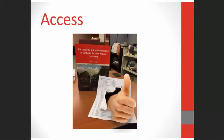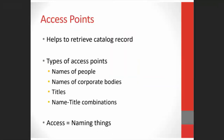Now that Bob has been described and his record matches him, how can patrons find him in the catalog? This is called access in cataloging. We create access points, which are bits of information that help us retrieve a catalog record. Here are the main types of access points in bibliographic records.